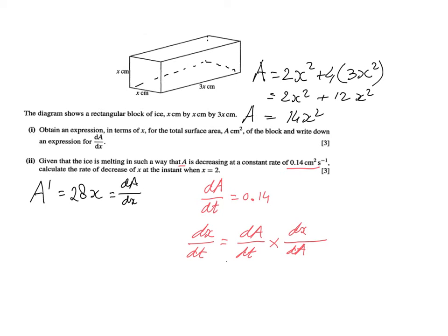And this is what we mean with connected rates of change. Now, what does that exactly mean? Well, dA/dt is 0.14. And dx/dA is the reciprocal of dA/dx.